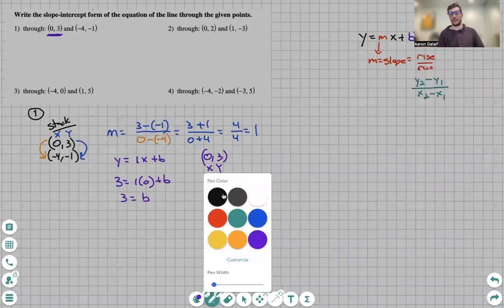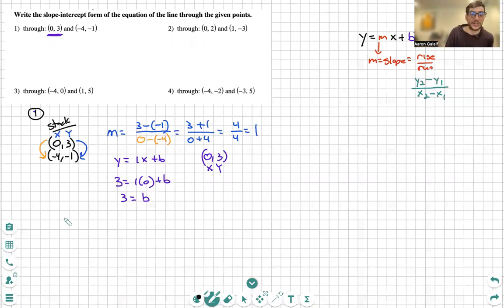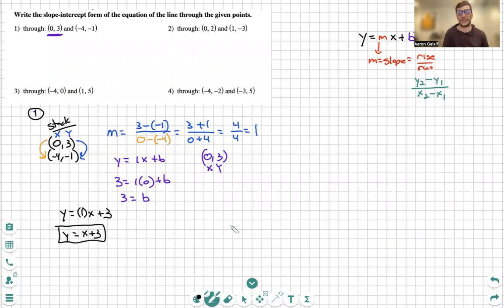That finishes the question. We will then write the answer as it should be written, y equals mx plus b, which would be one x, which we don't have to write, but we can write it just for simplicity for now, plus three. Let's clean it up because we don't need to keep that one because it's invisible at this point. And here is my answer.